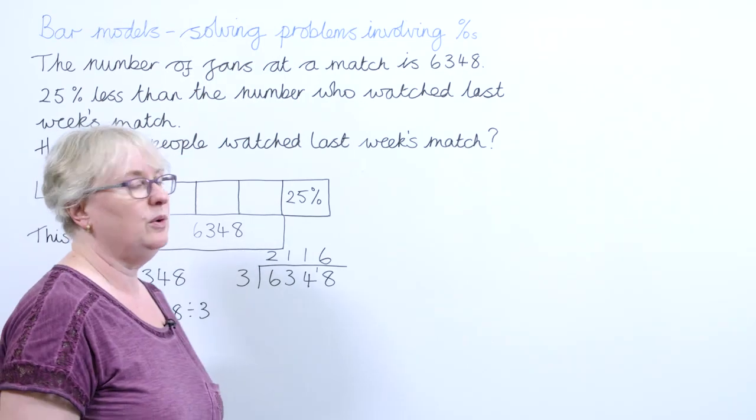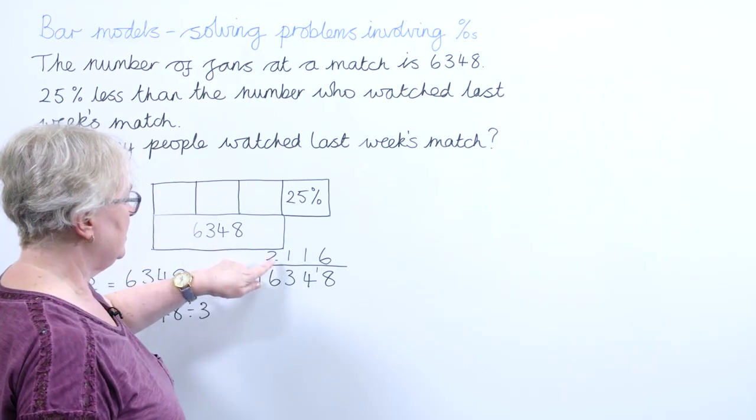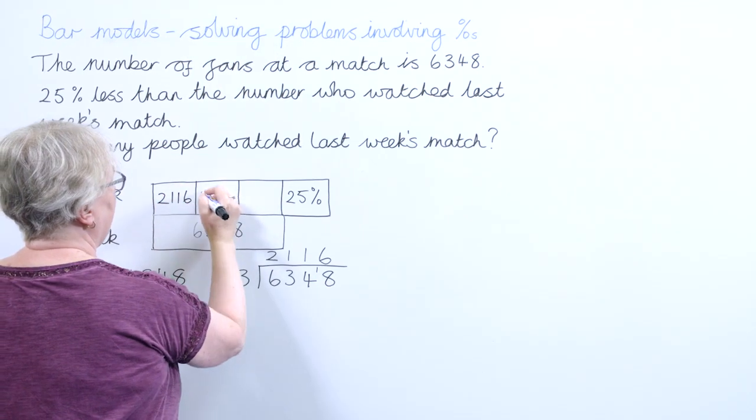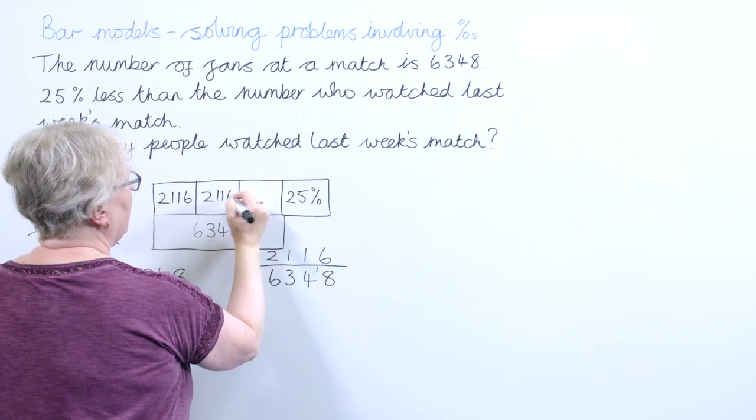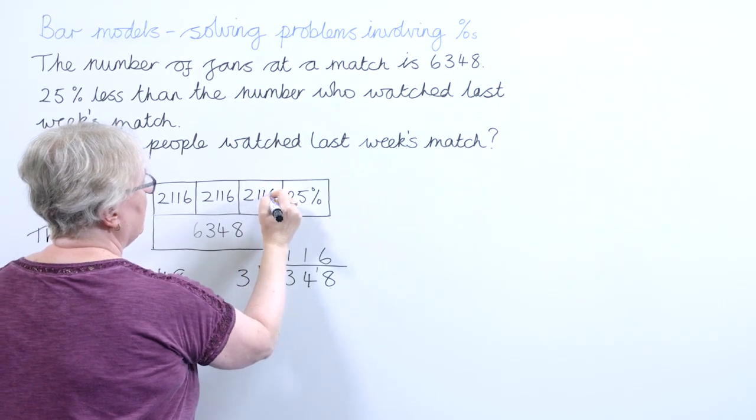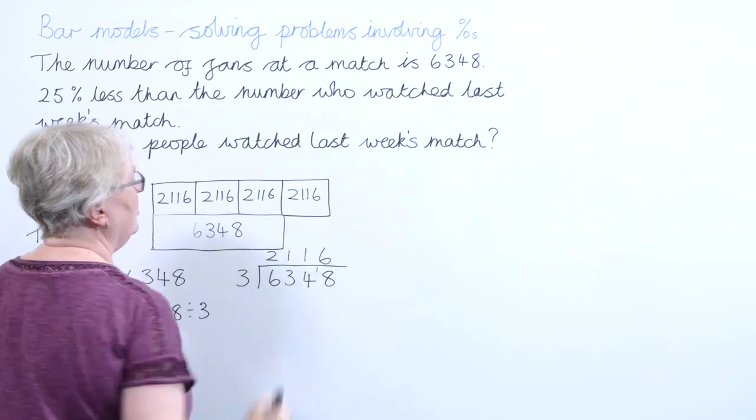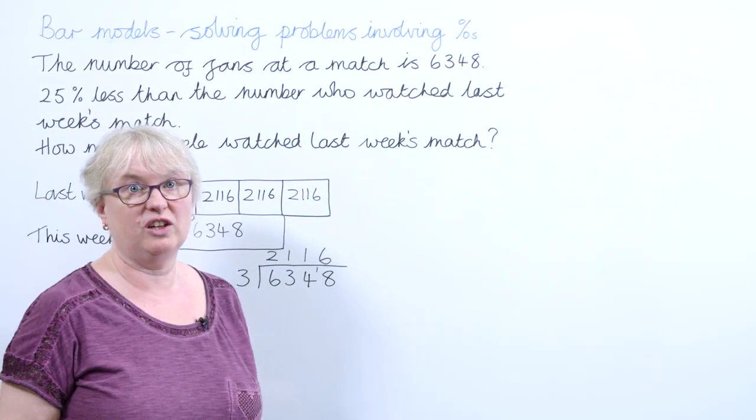I now know that 25% represents 2,116 fans. And I'm going to put that onto my bar model. I'm going to take out the 25% there and show that that is now 2,116 fans.